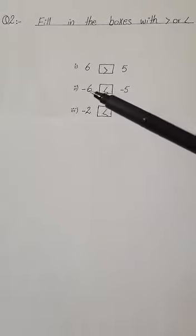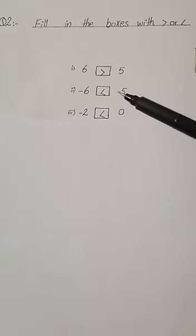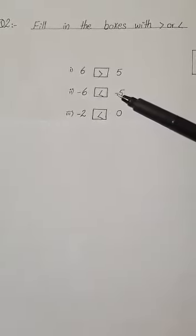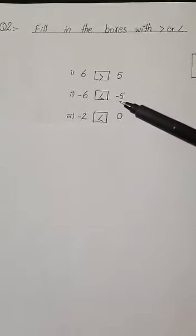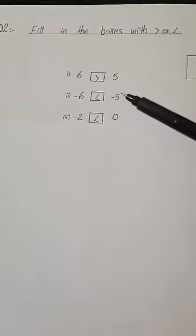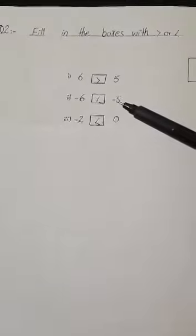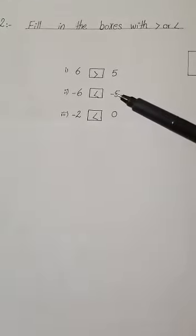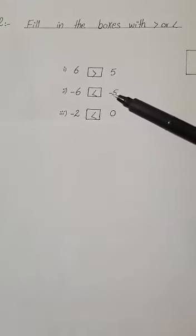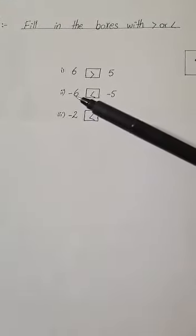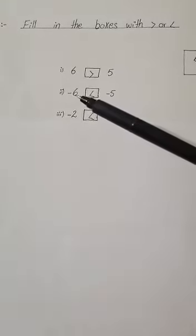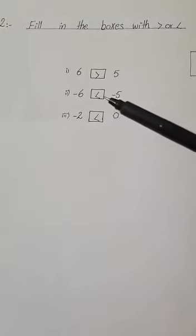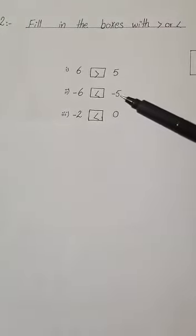Move on to the next one. We have two values: minus 6 and minus 5. Both are negative numbers. Which one is greater? By look, 6 looks greater than 5, but in actual, minus 5 is greater than minus 6, because they have the negative sign. When we use the negative sign with any number, its value decreases. So due to the sign of minus, 6's value is decreased, and we put the greater sign at the side of 5.